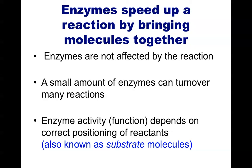A typical enzyme could make a reaction occur 10,000 times faster, or maybe even 100,000 times faster. This ability all depends upon the enzyme's ability to bind and position substrate molecules. Just like the person assisting the handshake by giving a big group hug, this activity depends upon the shape of the enzyme — it's very hard to give a group hug if you're missing an arm, for example. This demonstrates how the shape or structure relates to the function.